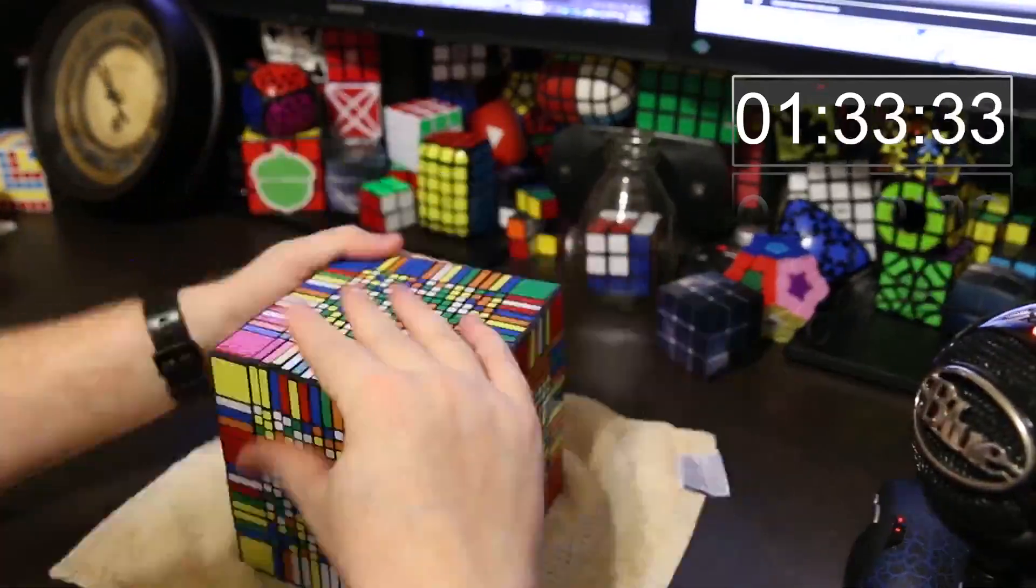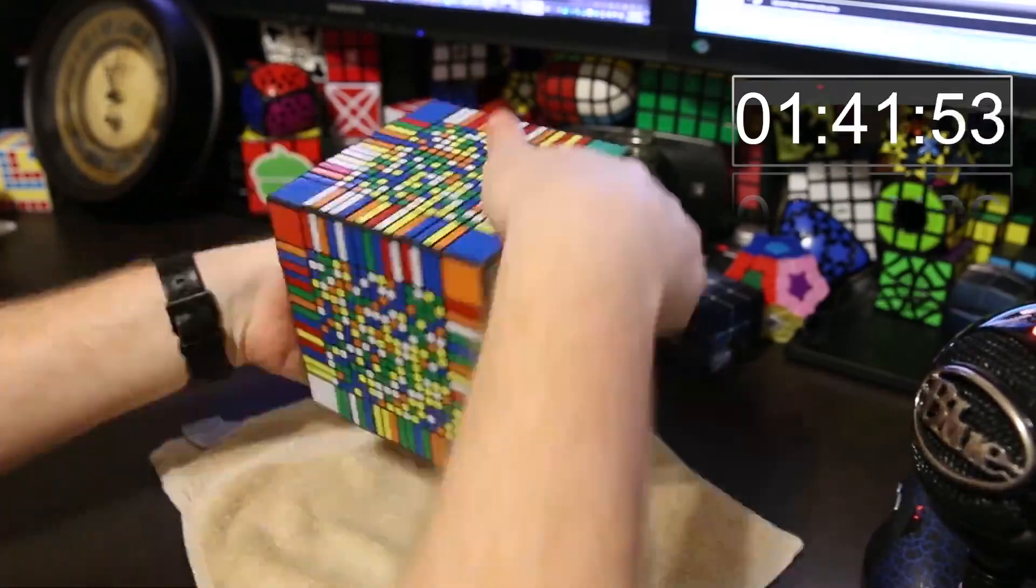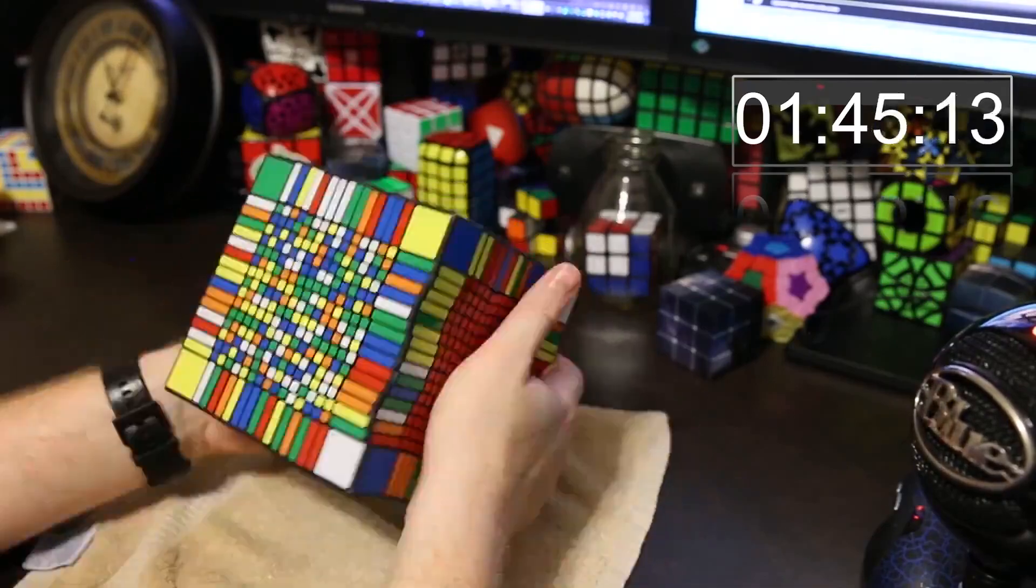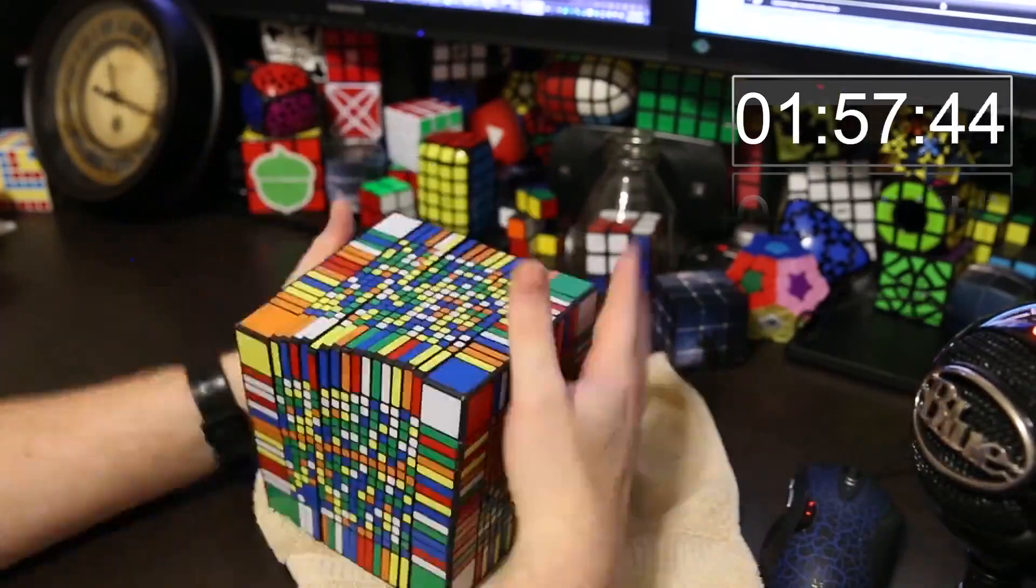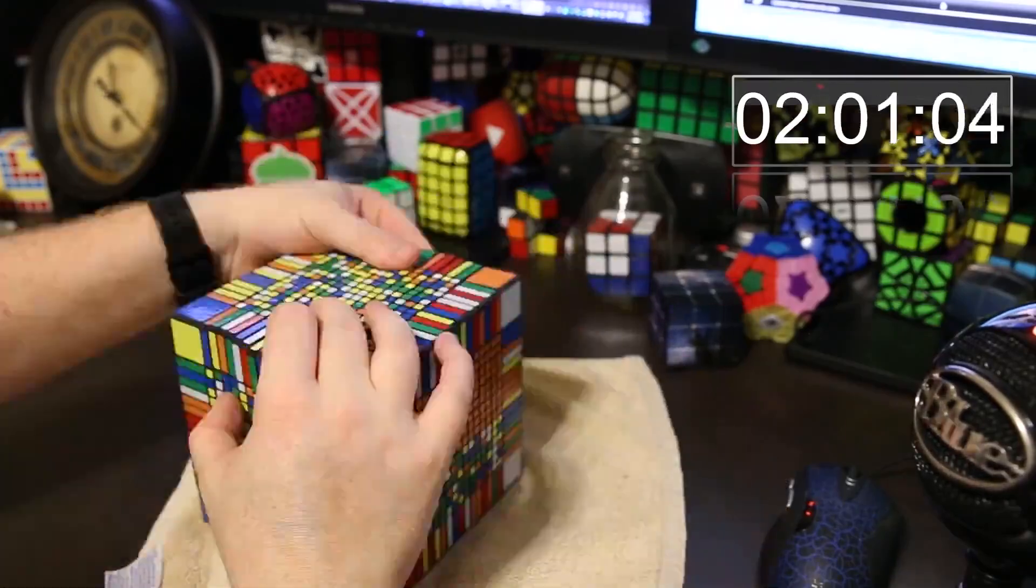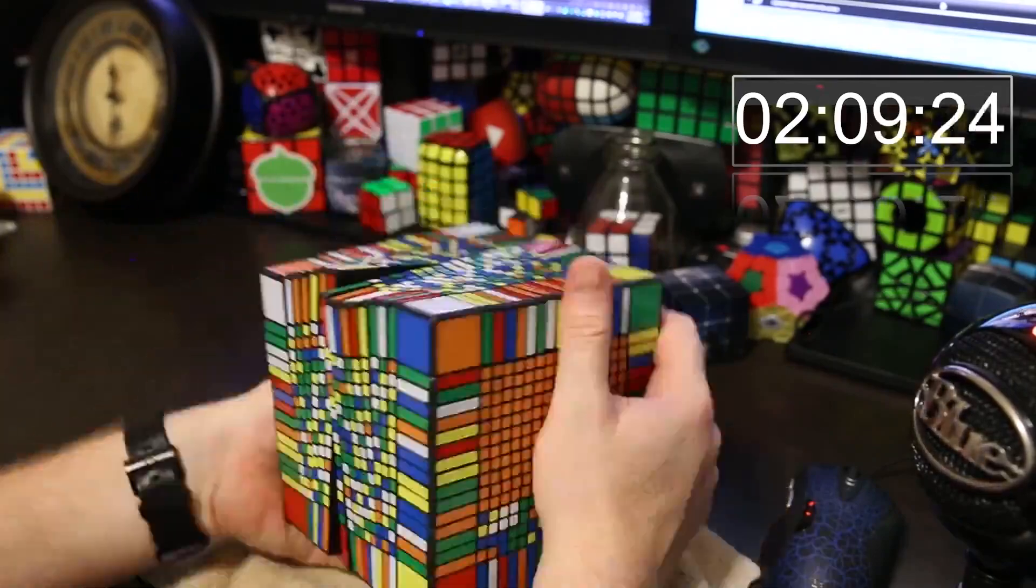So first I'm reducing the centers so that every center is fully solved, and then I reduce the edges so the edge pieces are all solved. And then it's like a big Rubik's cube with huge centers, long skinny edges, and tiny corners, although the corners are pretty big compared to the other pieces.